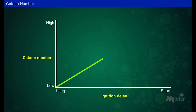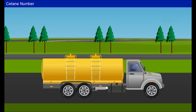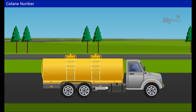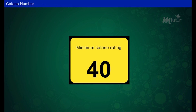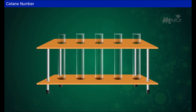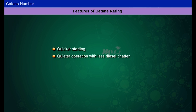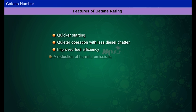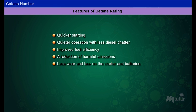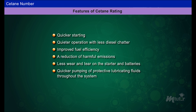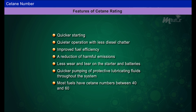A higher cetane number indicating a shorter ignition delay time usually means more complete combustion of the fuel. This translates into quicker starting, quieter operation with less diesel chatter, improved fuel efficiency, a reduction of harmful emissions, less wear and tear on the starter and batteries, and quicker pumping of protective lubricating fluids throughout the system. Most fuels have cetane numbers between 40 and 60.